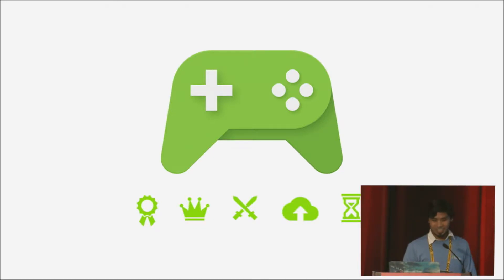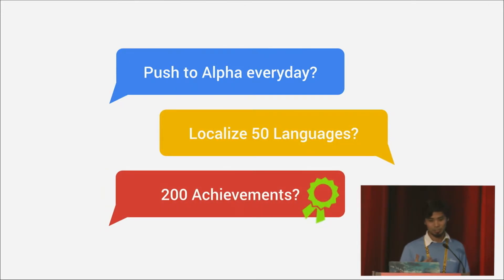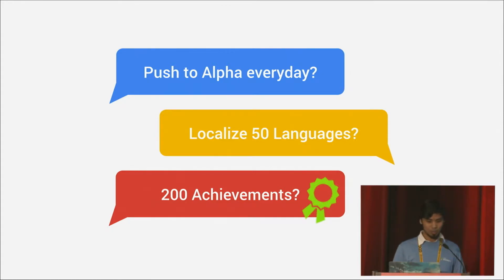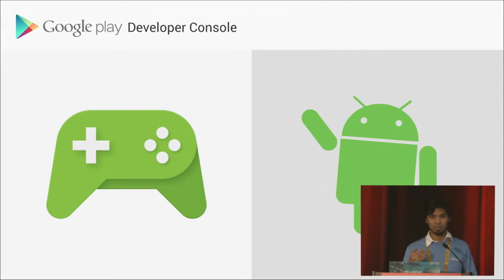Let's say you're building a game and you wanted to push your game to alpha every day to your alpha testers. Or maybe you wanted to localize your game to many languages. Or maybe your designer just went crazy and has tons of achievements he wants to add. Previously, you'd probably go to the Google Play Developer Console and add this metadata one by one, and we've heard a lot of developers found that very tedious.